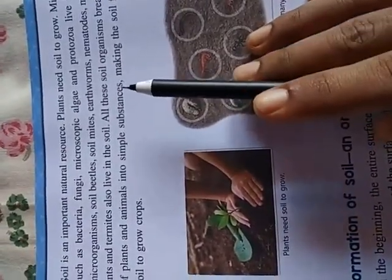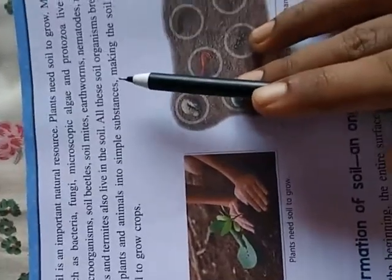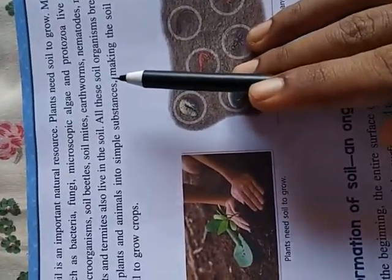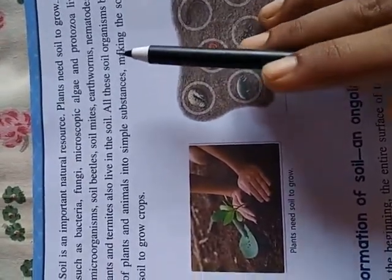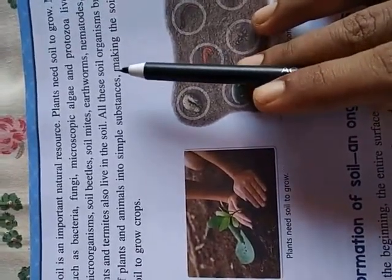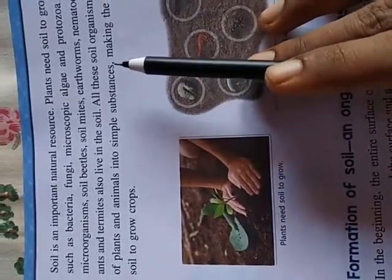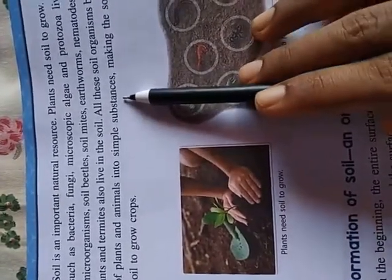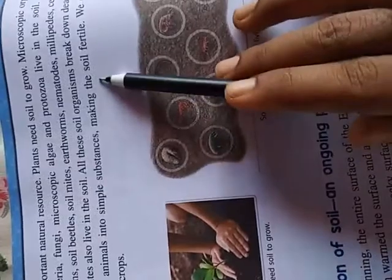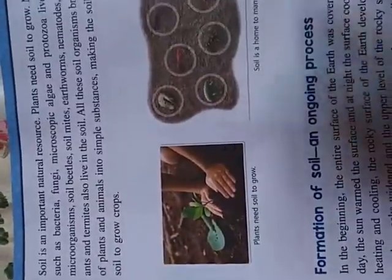In the soil, different kinds of animals can live, and plants and crop plants also need soil to grow. Microorganisms convert the dead animal and plant body into simple substances, which mix with the soil and make it fertile. This is the basic concept about soil.